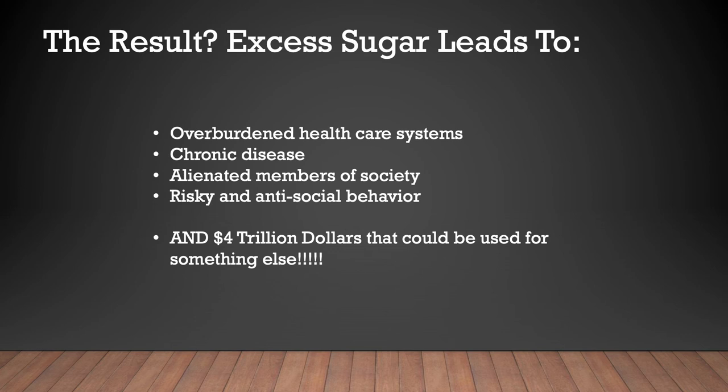So the result is: excess sugar in the diet leads to overburdened healthcare systems, chronic disease, alienated members of society, risky and antisocial behavior, and $4 trillion that could be used for something else. $4 trillion is a lot of money — we could use it to make better roads, redo bridges, build more housing. Can you imagine what $4 trillion could do?